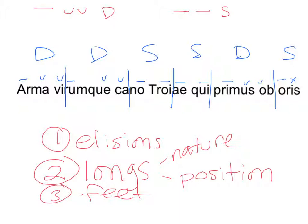We'll continue practicing with this and continue looking at elisions, but there will not be any elisions on your first scansion quiz, so this is a really nice introduction. If you need practice — which you probably do — get on hexameter.co and practice there. It might help to write the lines out on paper and scan them instead of trying to do it on screen. If you're getting a line wrong, retry it so you can figure out how you're messing up and how you can improve.